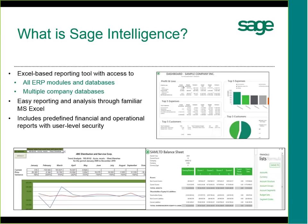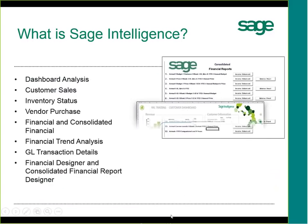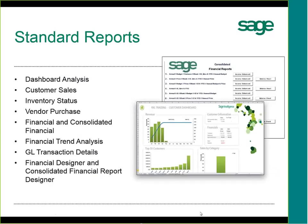There's always an additional level of security with SAGE Intelligence, and you can set permissions at the report level. Looking at the standard reports, we have dashboard analysis reports, customer sales reports, inventory and vendor purchase reports, and financial and consolidated financial reports — all pre-configured for you. We also have GL transactions, trend analysis reports, the financial designer, and the consolidated financial designer, where you can create your own reports.